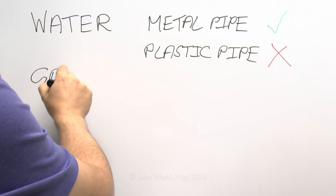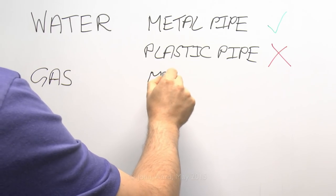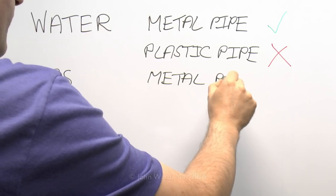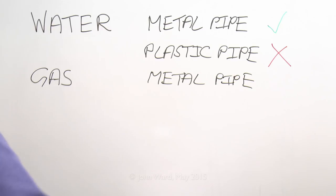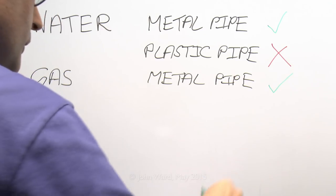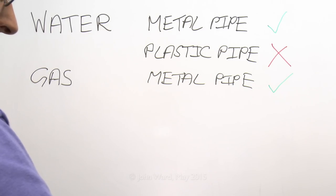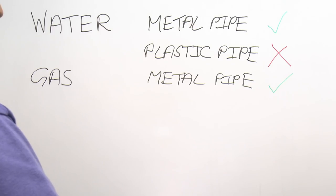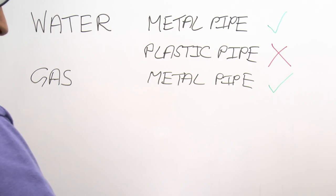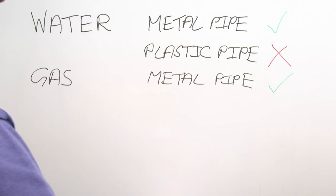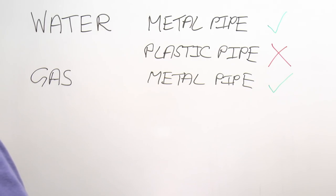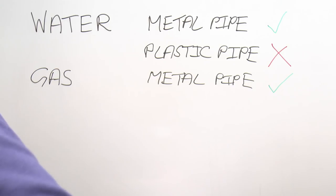Gas is by far the second most common item, and gas is supplied in metal pipes, making it conductive and extraneous, so it needs to be bonded. Gas pipes in the street are frequently plastic these days — generally yellow — but those plastic pipes do not come into the building. The pipes coming into the building will be metallic, so the likelihood of a plastic gas main in your house is essentially zero. The pipes inside the building for gas will not be plastic either — they're always going to be metal.